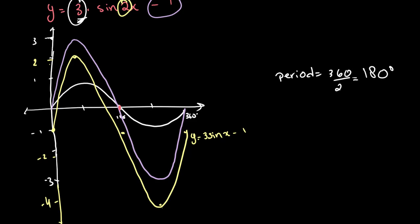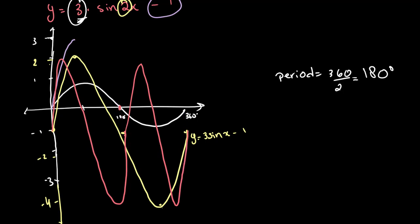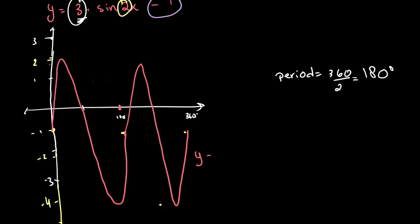So our graph will repeat itself over 180 degrees. Our whole entire graph will repeat itself once, so that should look like this. We can erase the other line just for clarity, and this is our final graph of y is equal to 3 times sine of 2x minus 1.